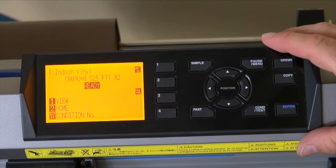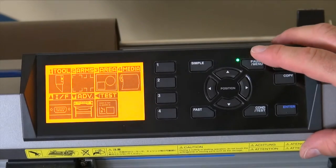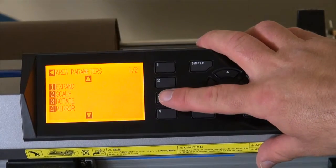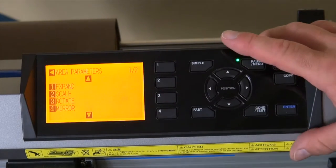To access the menu, you'd press the pause menu button and then you would want to select 3 for area. That's going to get you into the area parameters menu.